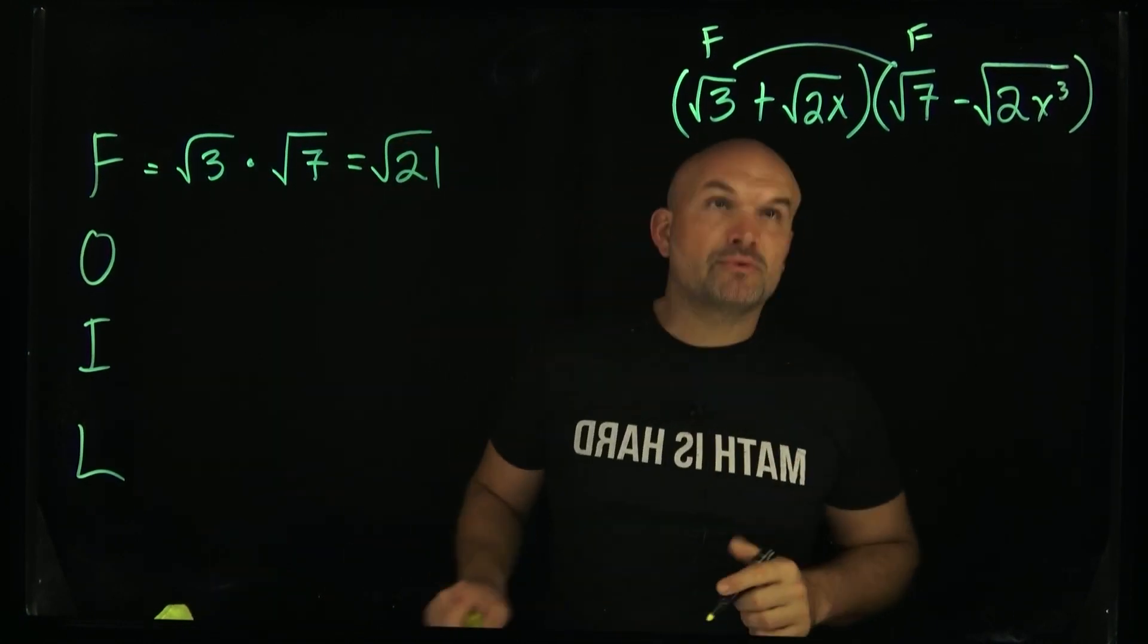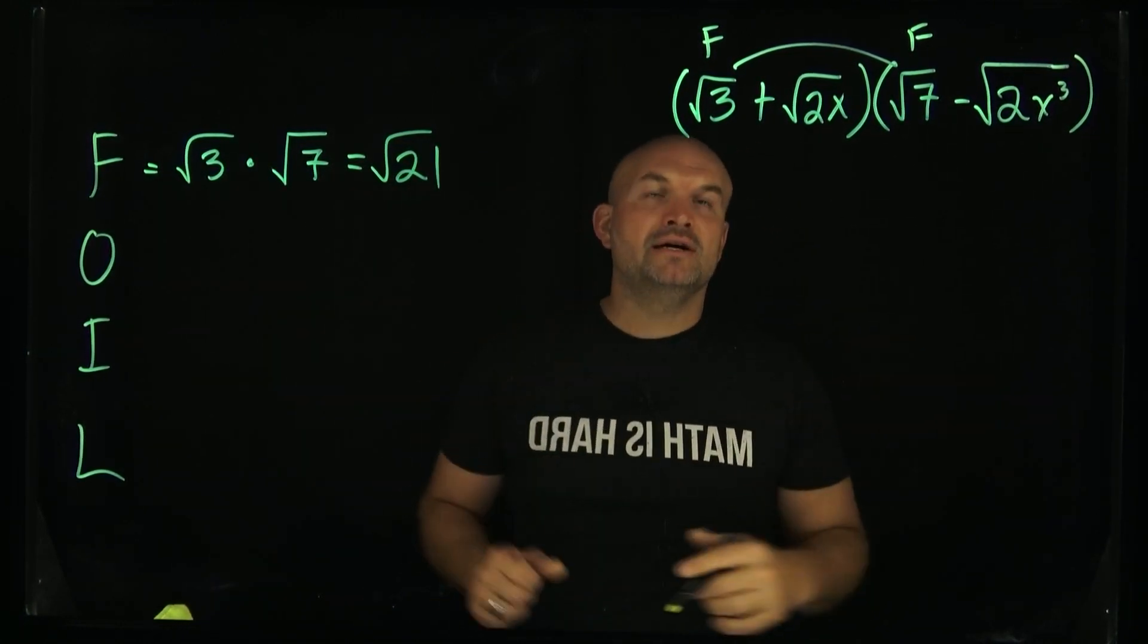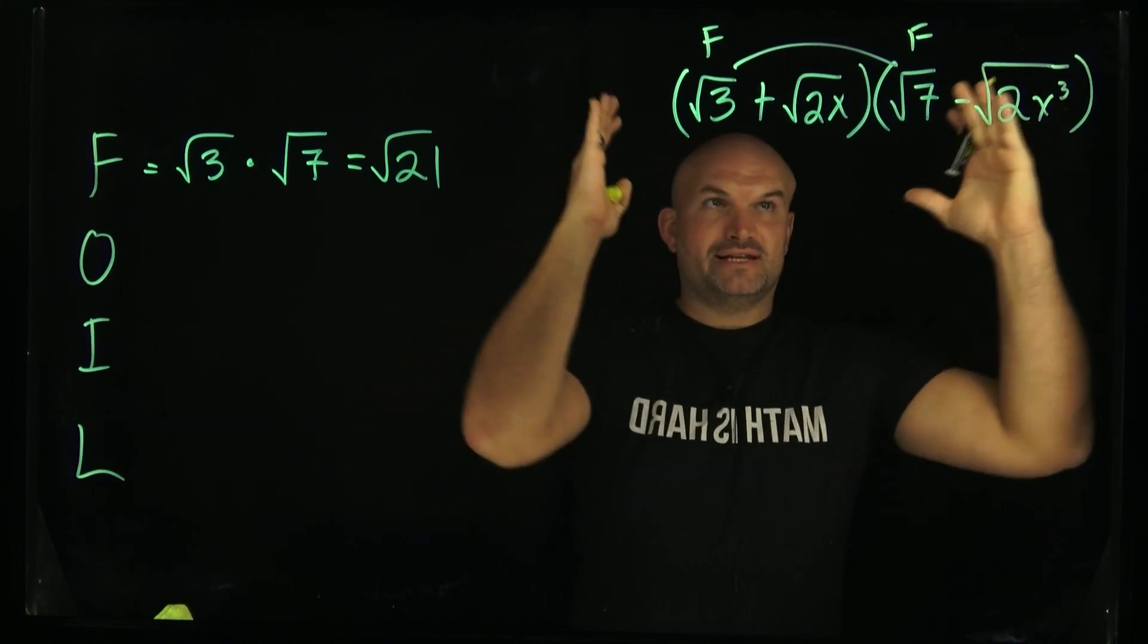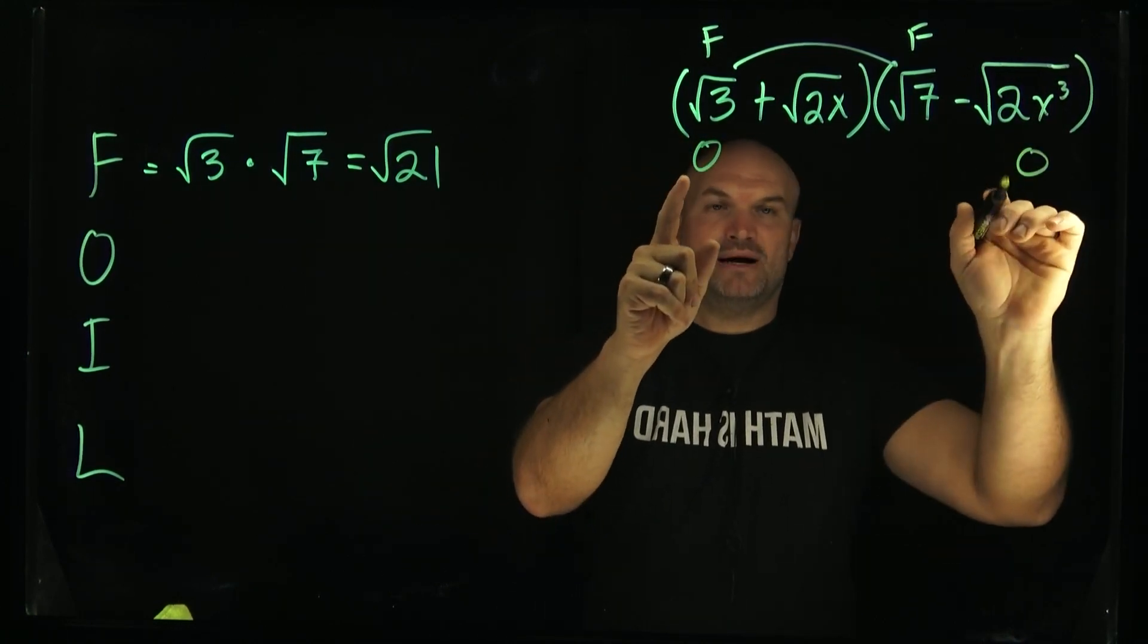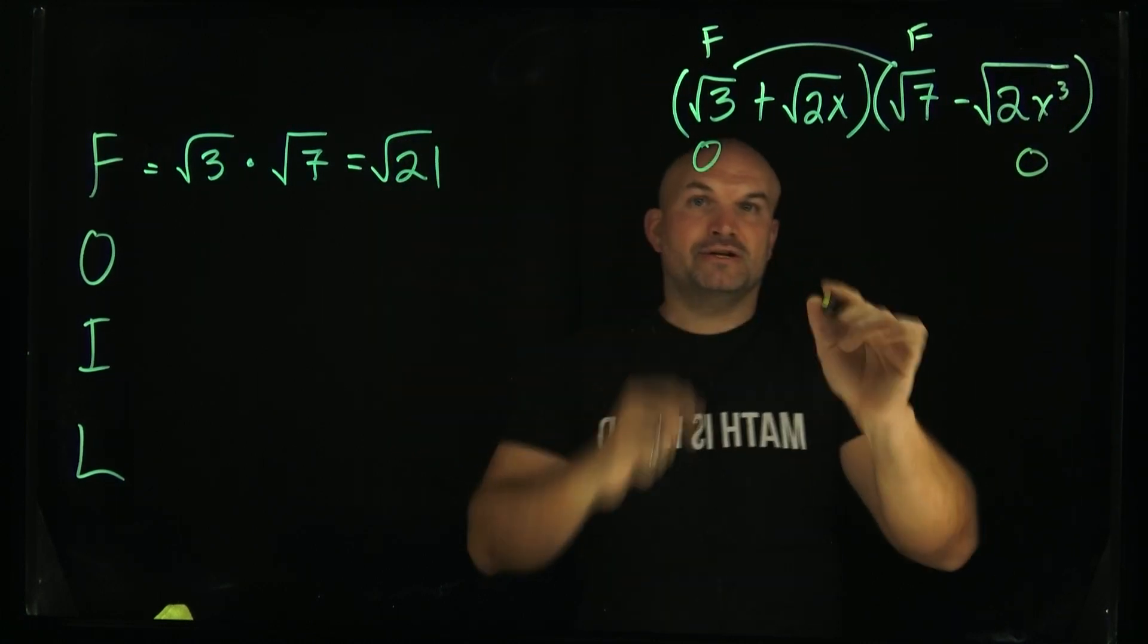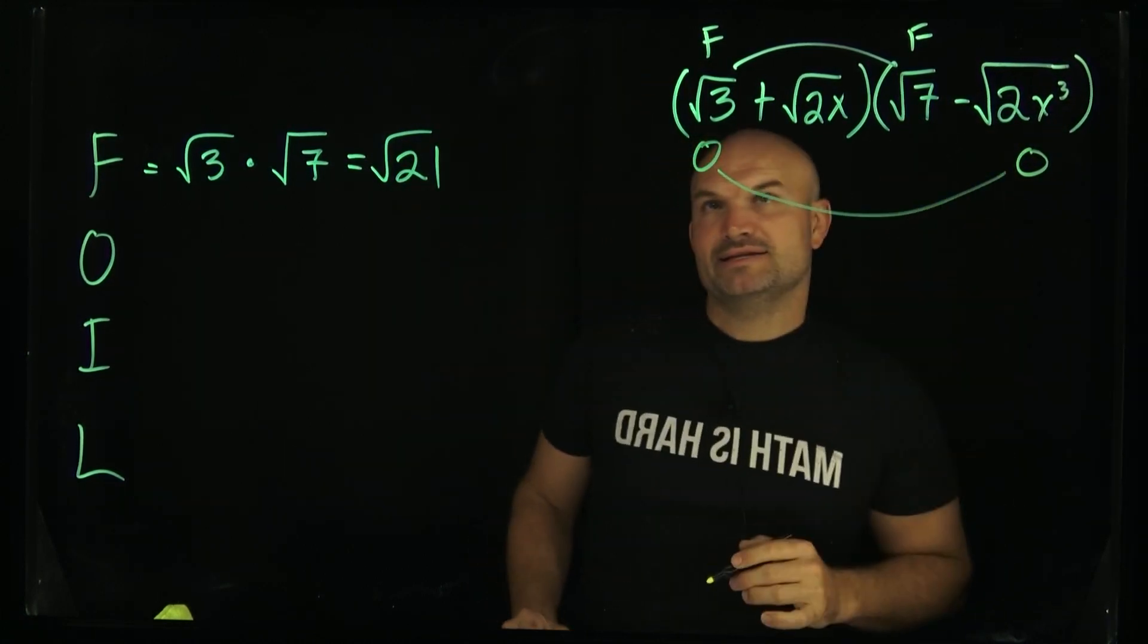The next one we're going to work on is the outer. The outer terms, if you look at this as a whole expression, are going to be this first and this last term out here. They're at the outer ends of this expression. Now I'm going to multiply these.